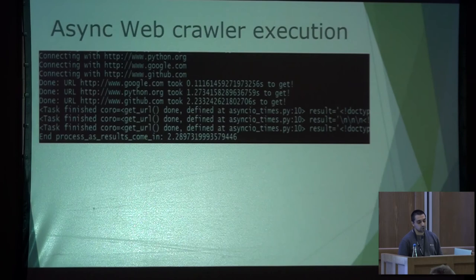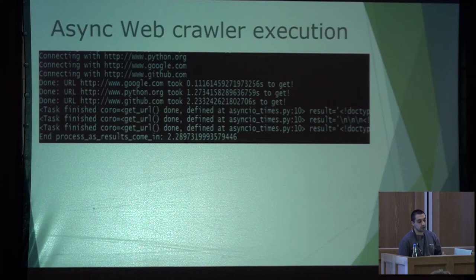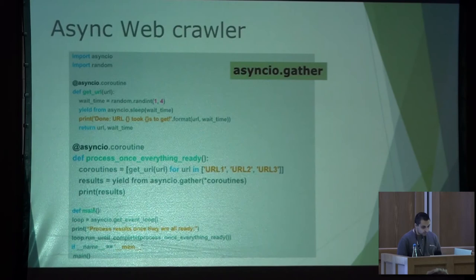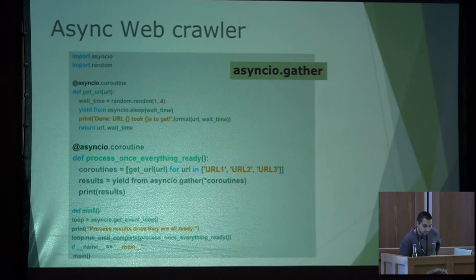For async IO as_complete, we declare a coroutine that processes results as they come. What we do in this coroutine is call the get_url coroutine for each URL defined in the array. For iterating the response, we use the as_complete method from asyncio and pass as parameter the coroutines in the array. In this way, we can process all the URLs from which we want to extract information and links.